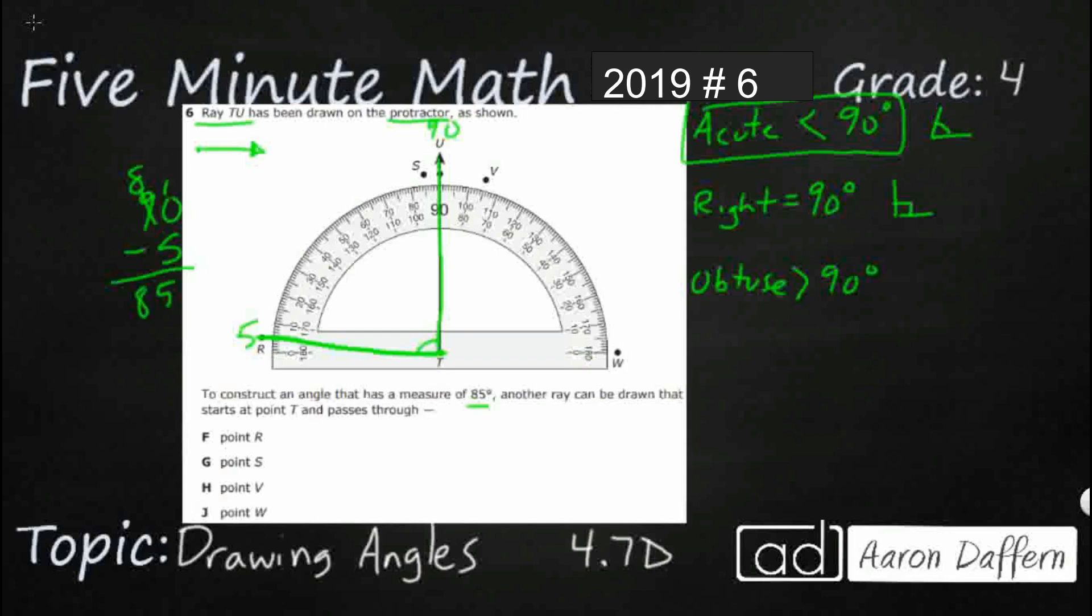And, wow, look at that. That might be exactly what we're looking for. That point R gets you an 85 degree angle. So, that makes sense. That looks like it's almost a right angle, but it's a little bit acute because this R is up five degrees. So, let's just verify and let's just see what the other ones look like.